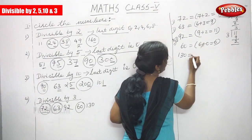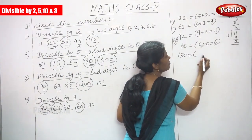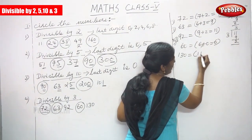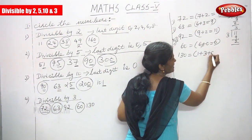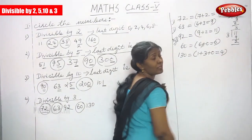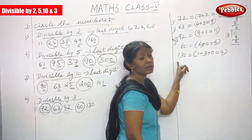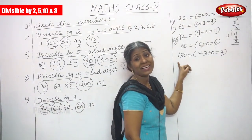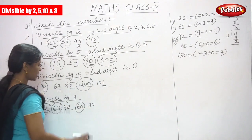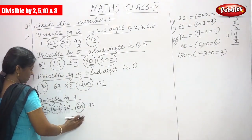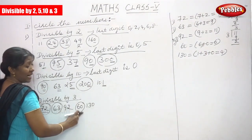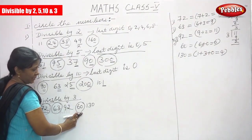Next is 130: 1 plus 3 plus 0 equals 4. 4 is not divisible by 3, so 130 is not divisible by 3. Do not circle it. The answers are 72, 63, and 60 — these are the numbers divisible by 3.